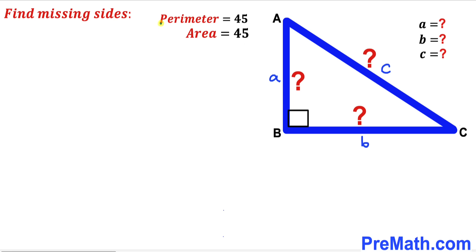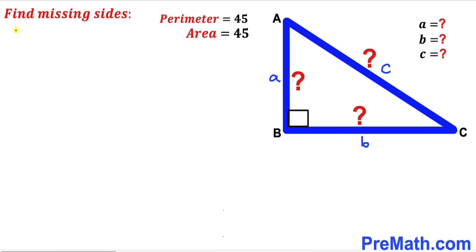We know the perimeter of this triangle has been given to us as 45, and we know the perimeter is the sum of all side lengths. So a plus b plus c is going to be equal to 45. I'm going to label this as equation number 1.